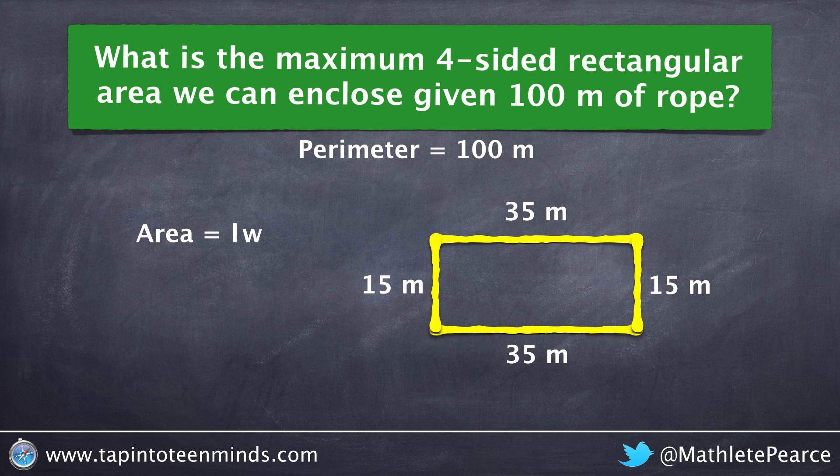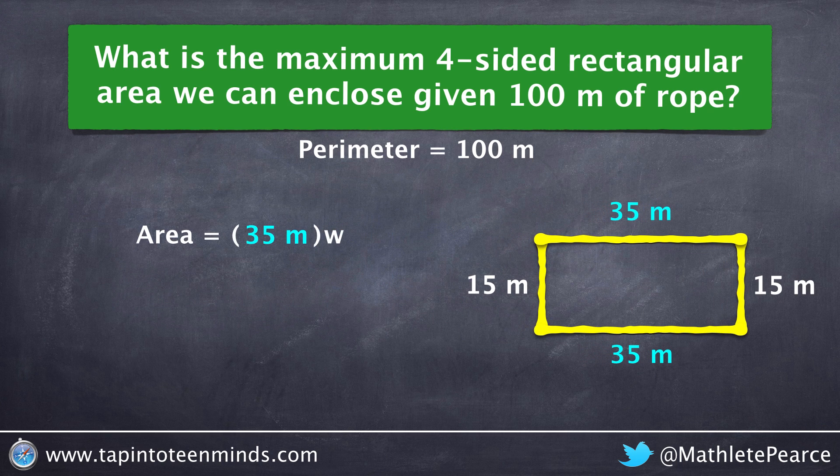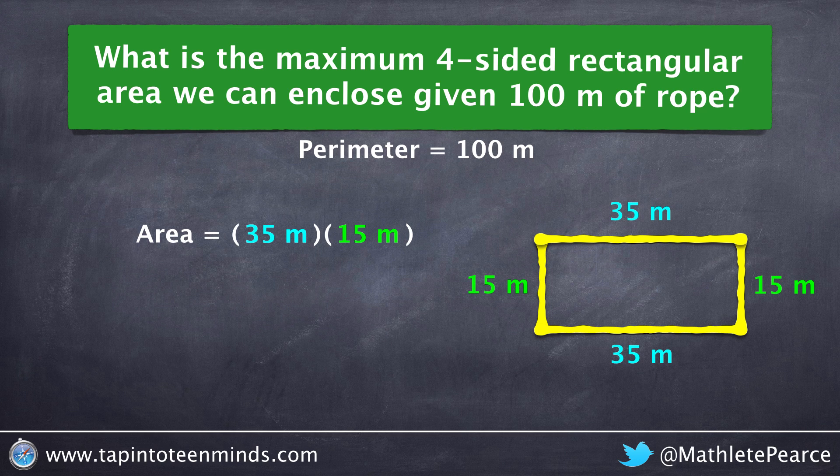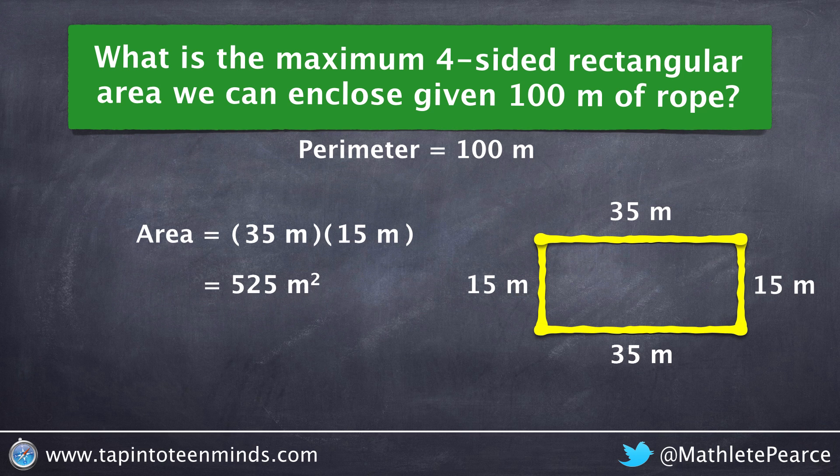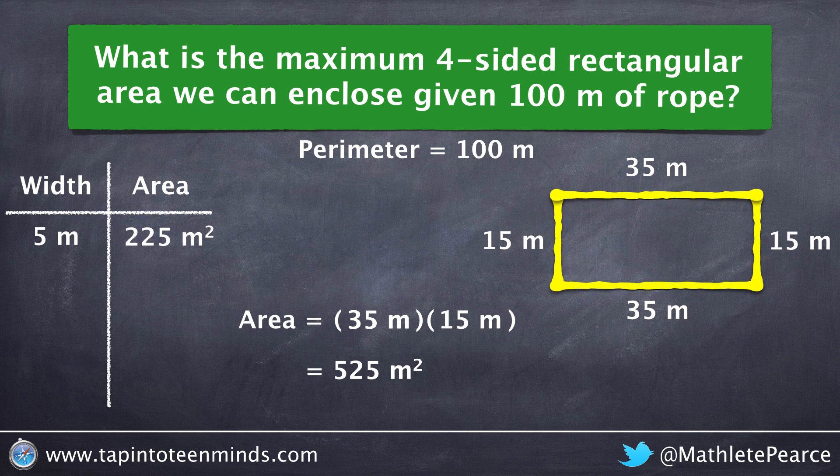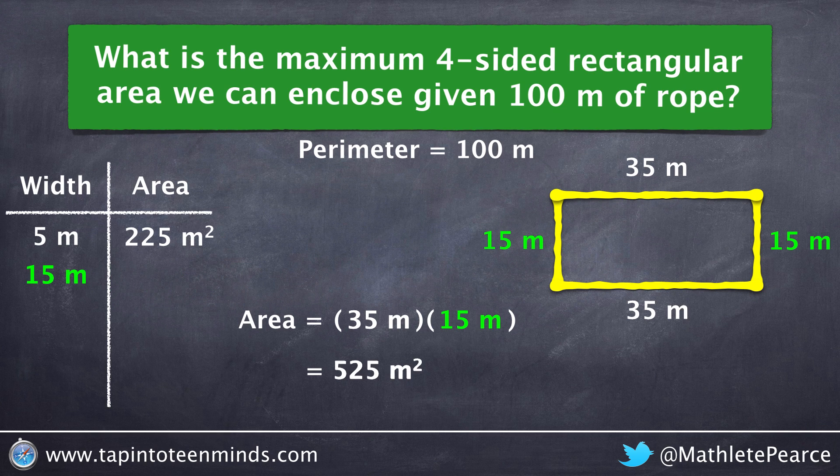Calculating the area of this rectangle, we multiply the length of 35 meters by the width of 15 meters, yielding a total area of 525 meters squared. Again, taking a look at the relationship between the width and the area, we have a width of 15 meters, and our area will increase to 525 meters squared.